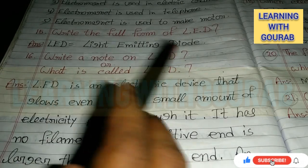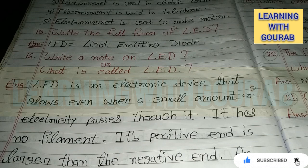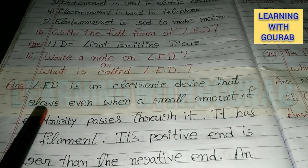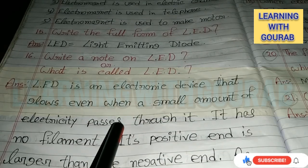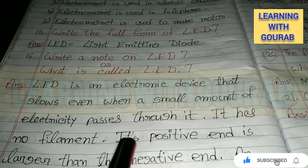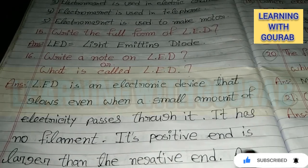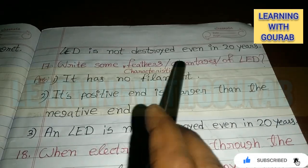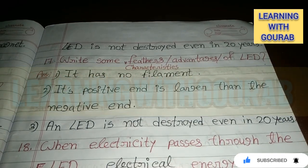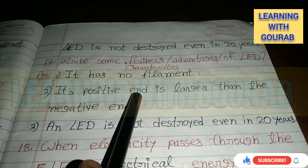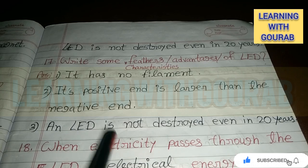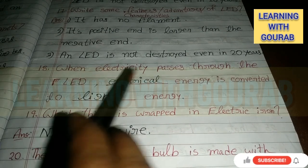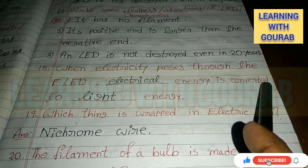Next: Write a note on LED, or what is called LED? Answer: LED is an electronic device that glows even when a small amount of electricity passes through it. It has no filament. Its positive end is larger than the negative end. An LED is not destroyed even in 20 years. When electricity passes through an LED, electrical energy is converted to light energy.